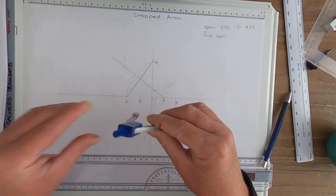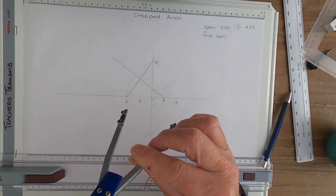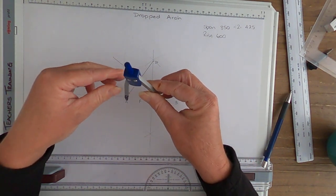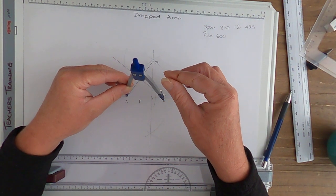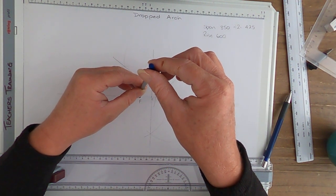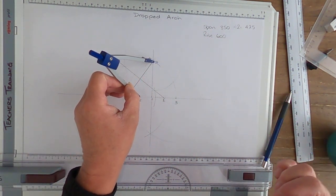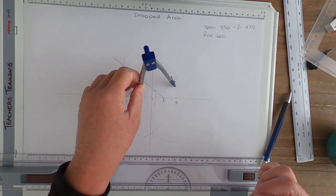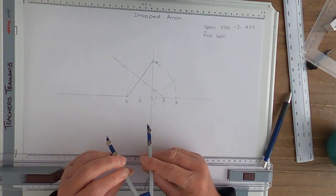The very last step is we put our point on F to B and scribe a line up, and that's our intrados for our dropped arch.